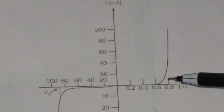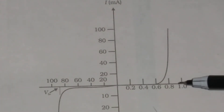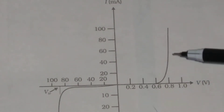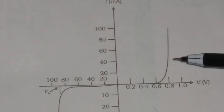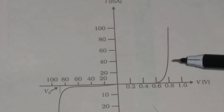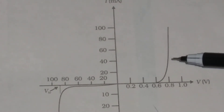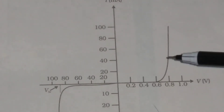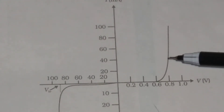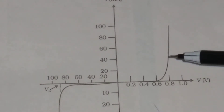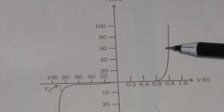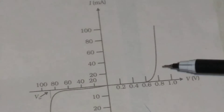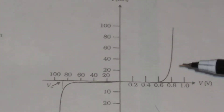The current in forward bias is basically due to the diffusion current, which is of the order of milliampere. In forward bias, you also have drift current, but the magnitude of the drift current is very small — of the order of microampere — so it can be neglected. The drift current is negligible in comparison to the diffusion current in forward bias.